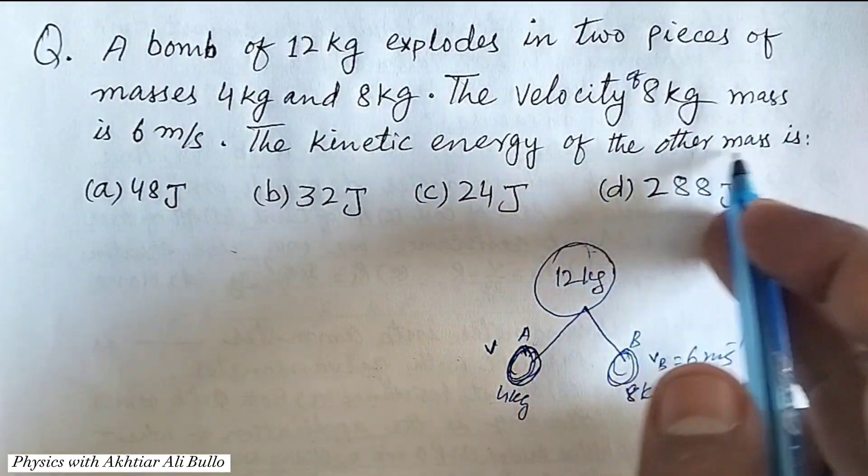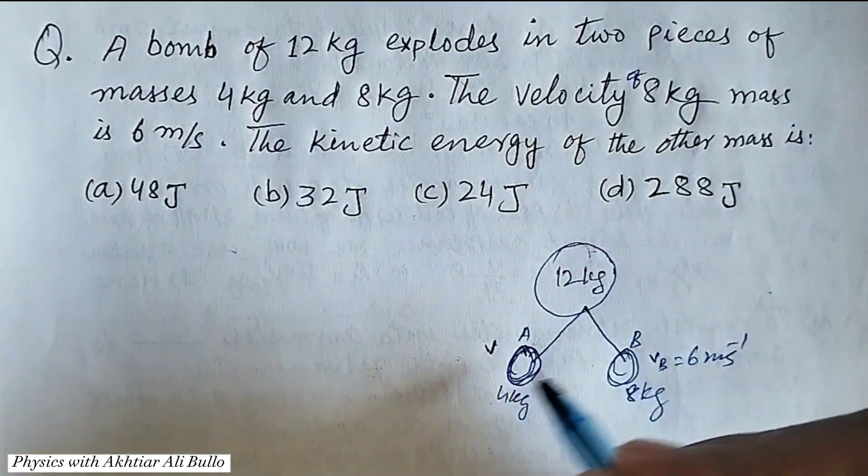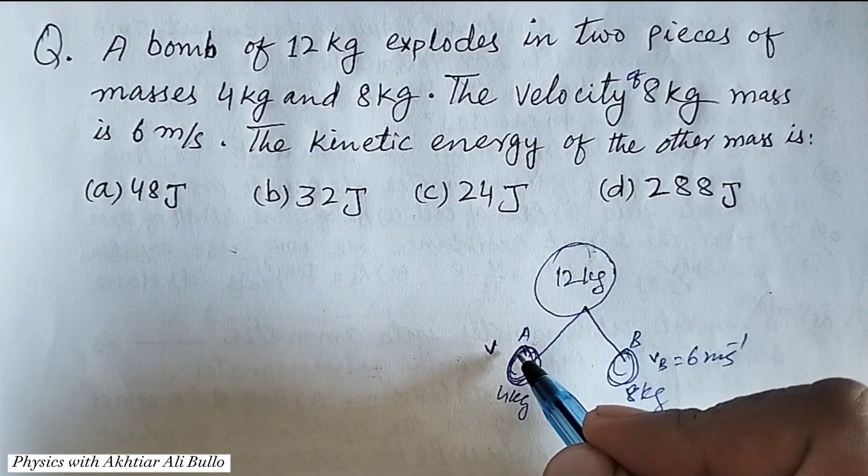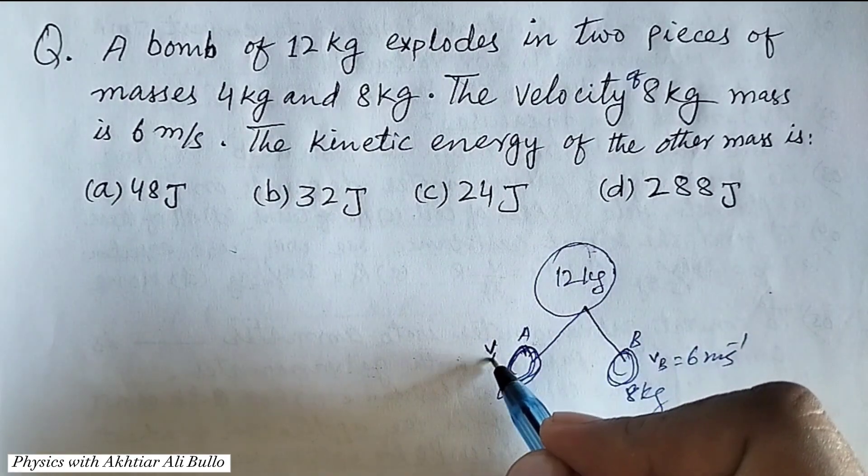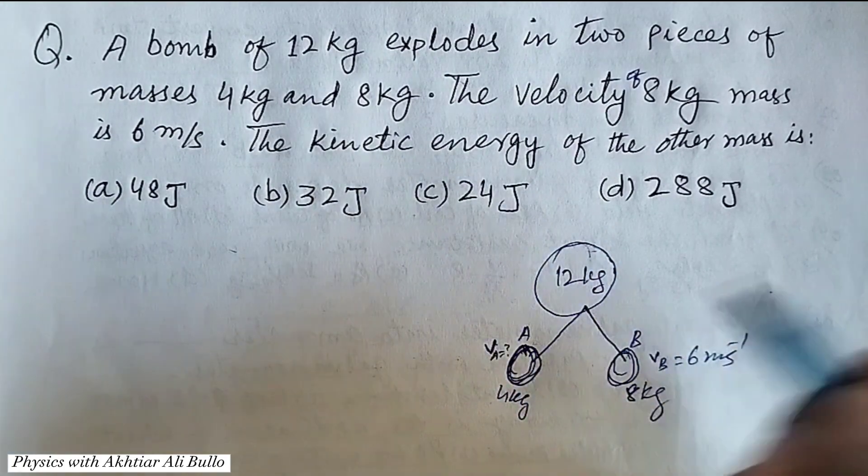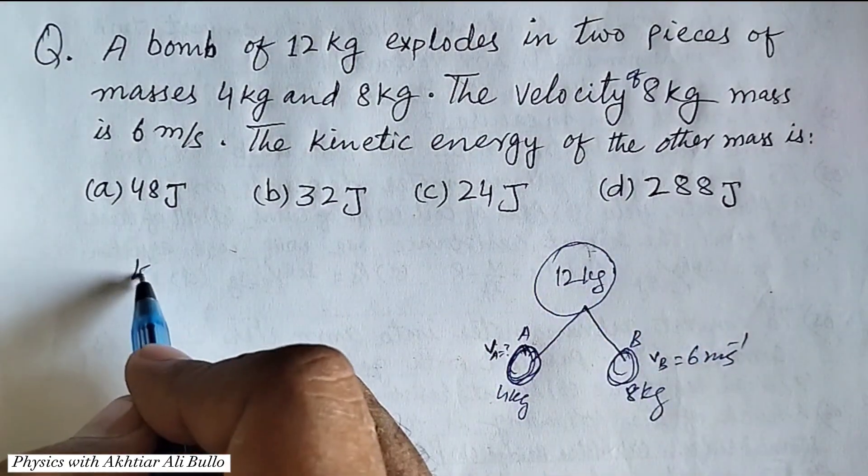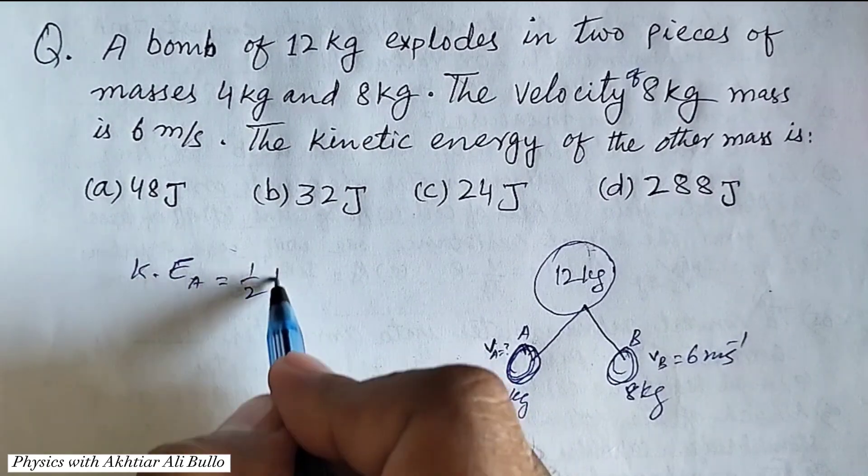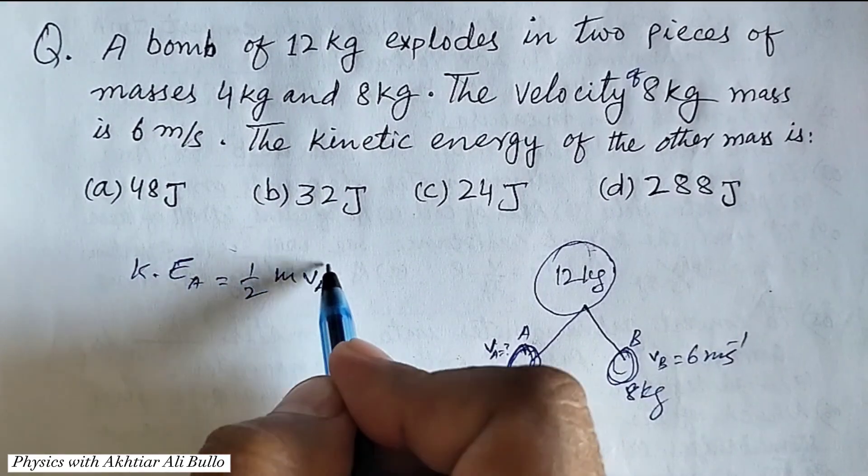The kinetic energy of the other mass - means we have to calculate the kinetic energy of mass A. So, first of all we will calculate the velocity of mass A, as kinetic energy is equal to 1/2 m vₐ².